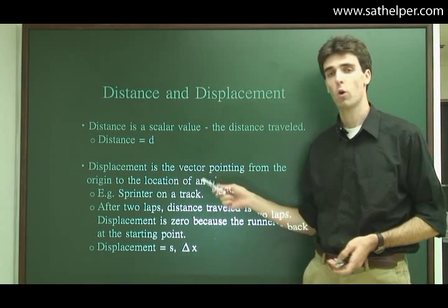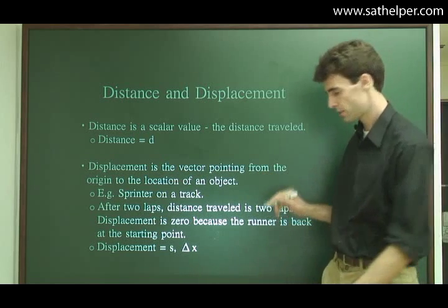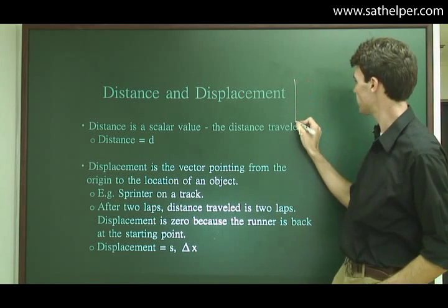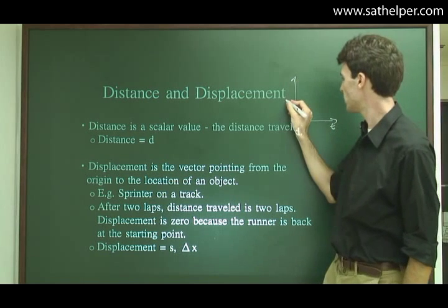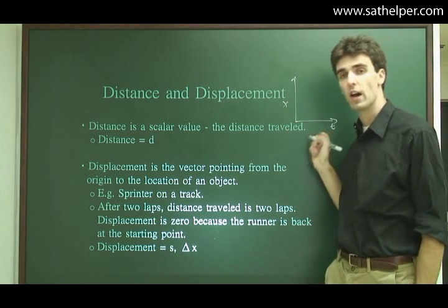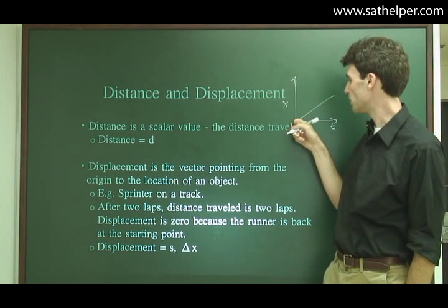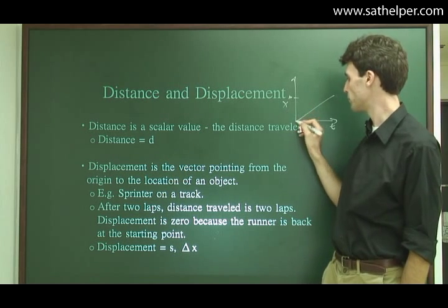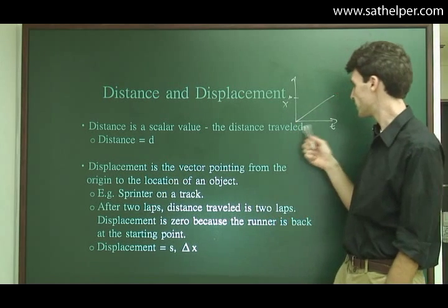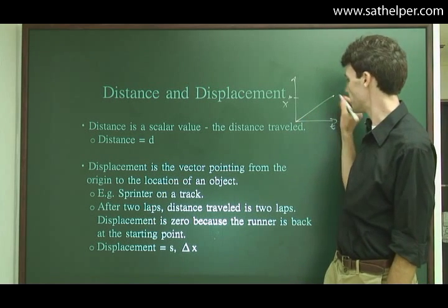Displacement, however, is the corresponding vector property. Displacement is the difference if you are on an axis and we're graphing, let's say, position x over time t. So this is a person moving from 0 to some distance, maybe 10. They move from 0 to 10 meters, maybe, in a certain number of seconds. Their distance traveled is 10.